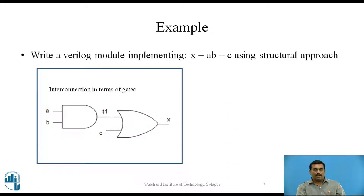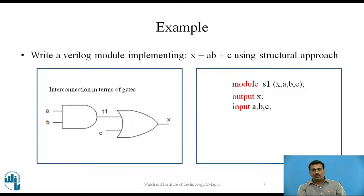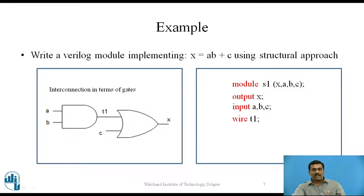Now let us write the module definition using the Structural approach. We start with the module keyword; the module name is S1. This is the list of ports: x is the output port, and a, b, and c are the input ports. Then we define input and output: output x, and inputs a, b, and c using the output and input keywords. We also require one intermediate signal, T1, which is the output of the first AND gate, and it is defined as the wire data type — wire T1. This wire represents T1 in the circuit.